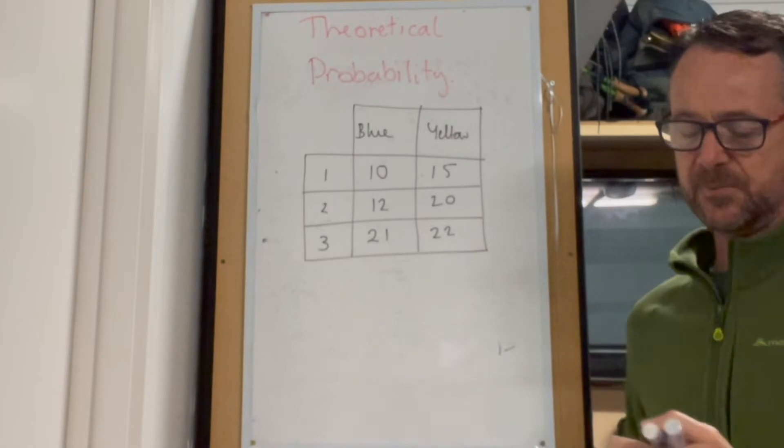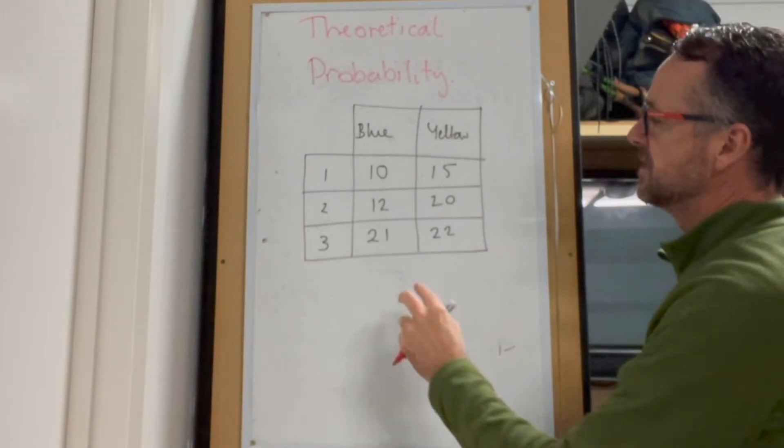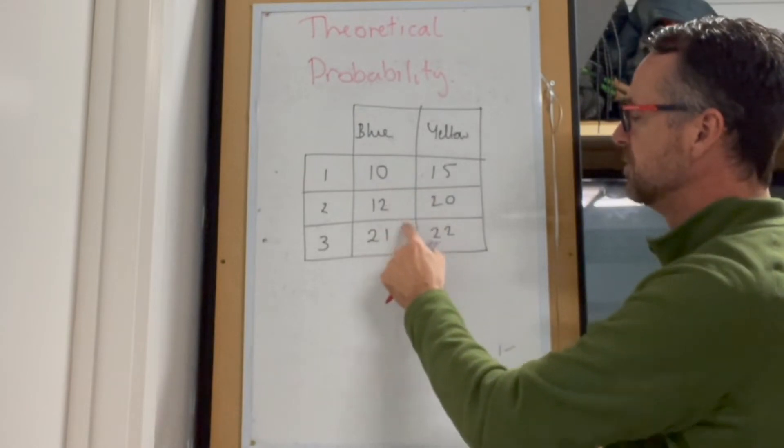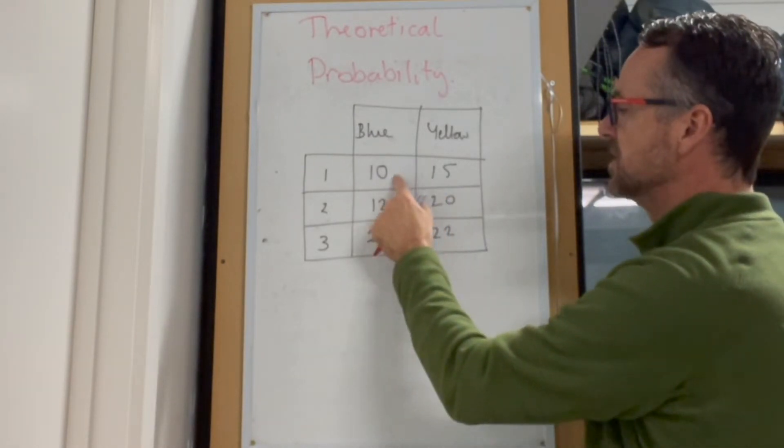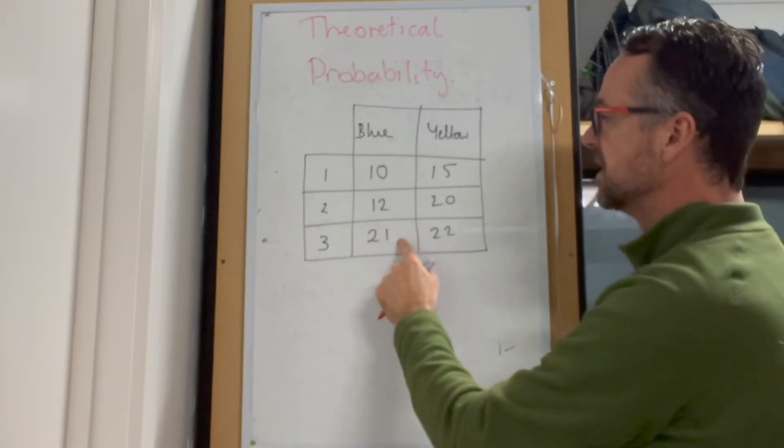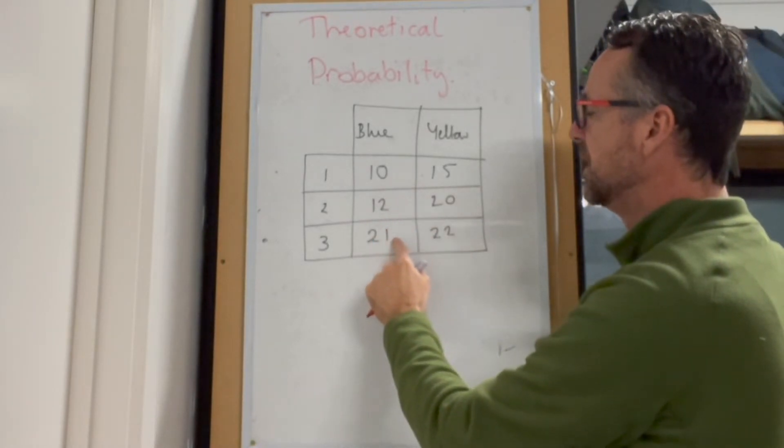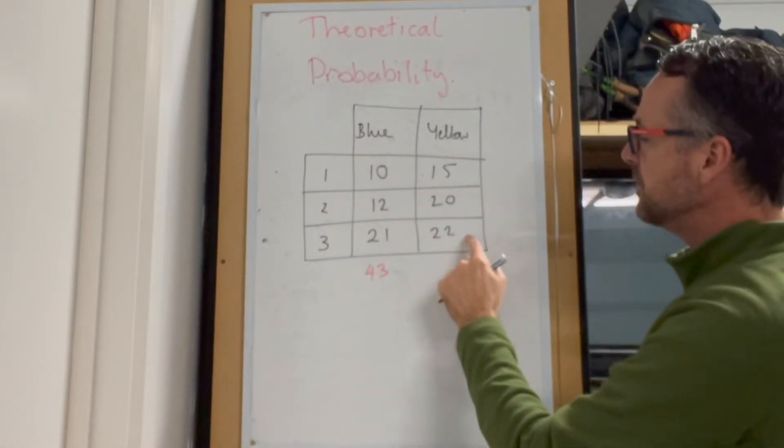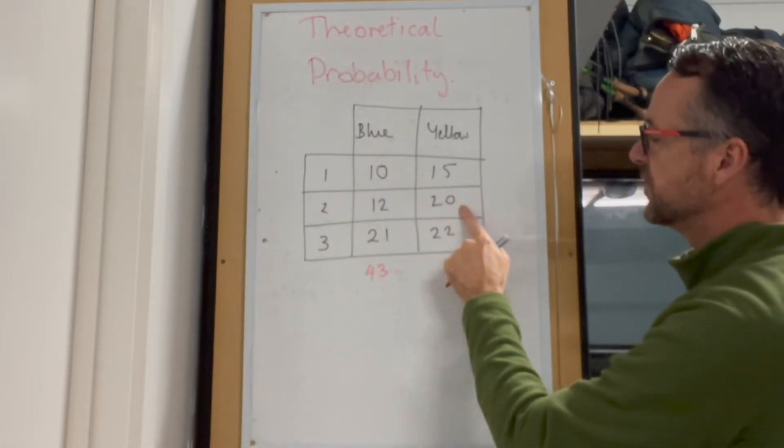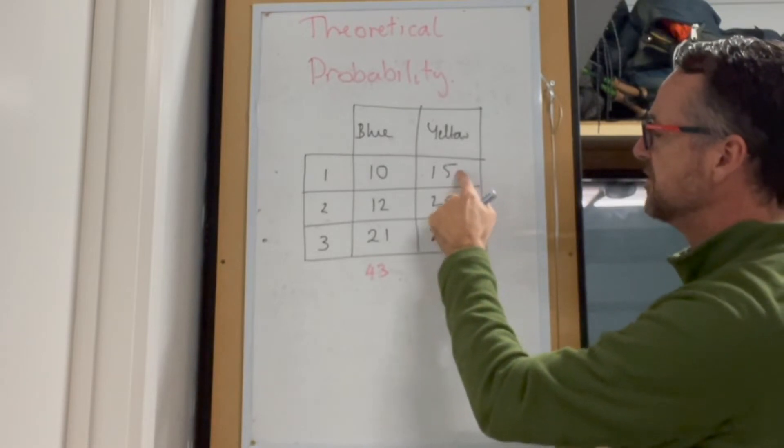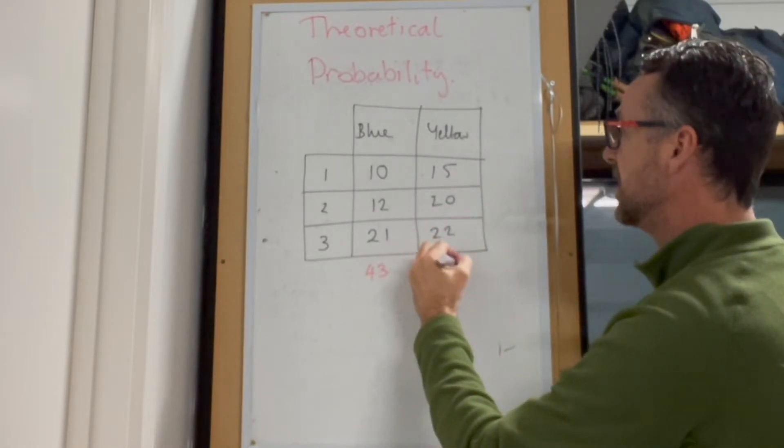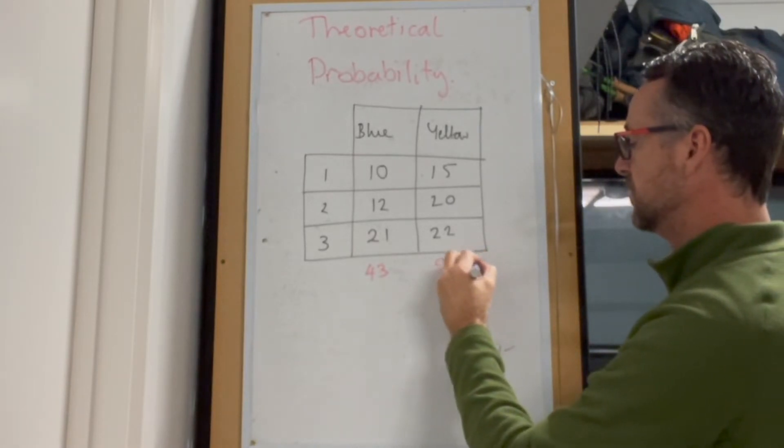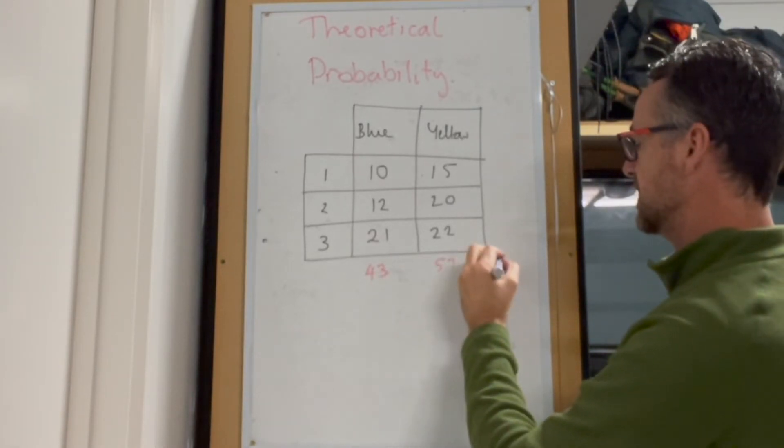Well, a couple of things we're told here. What's the total number of counters? That would be adding up all of these numbers. So 10 plus 12 plus 21—so 10 and 12 is 22, and 21 is going to make that 43 blue counters. Here we've got 22 plus 20 is 42, 52, 57. So we have 57 yellow counters. So 43 plus 57 is going to be 100.